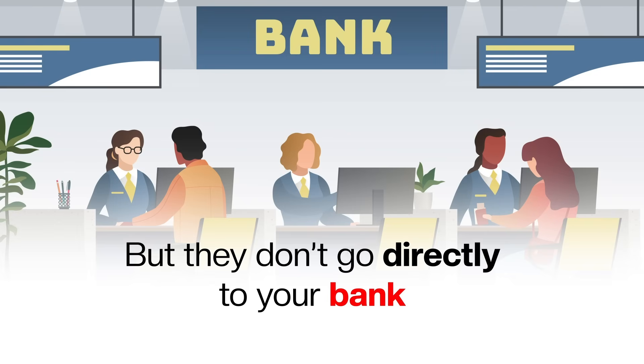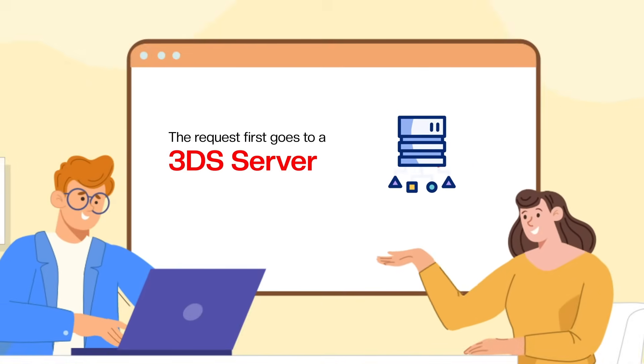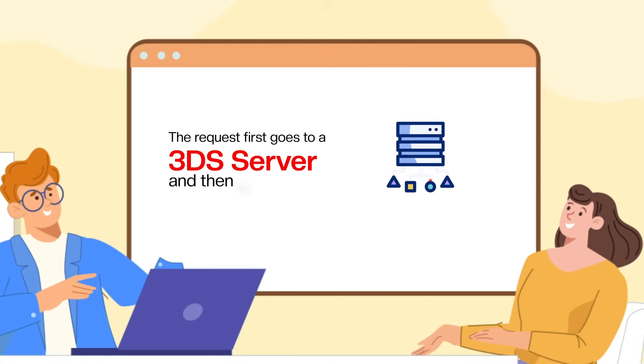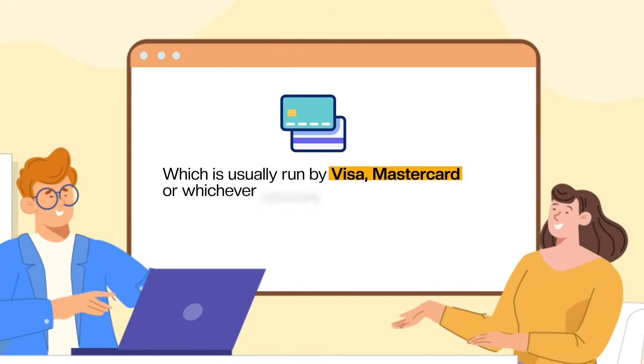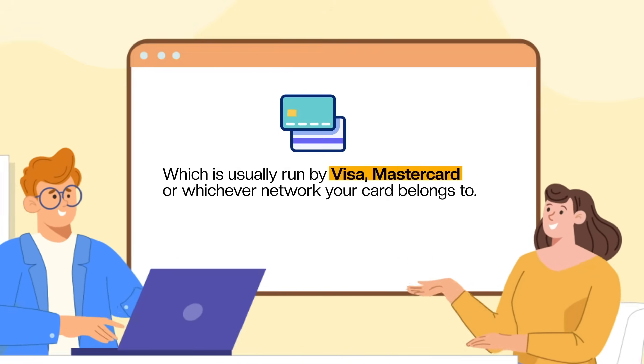But they don't go directly to your bank. There's a middle route. The request first goes to a 3DS server, and then to something called a directory server, which is usually run by Visa, MasterCard, or whichever network your card belongs to.